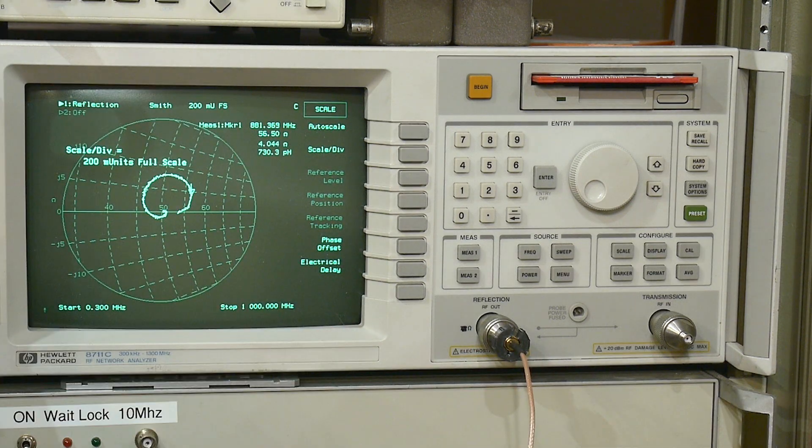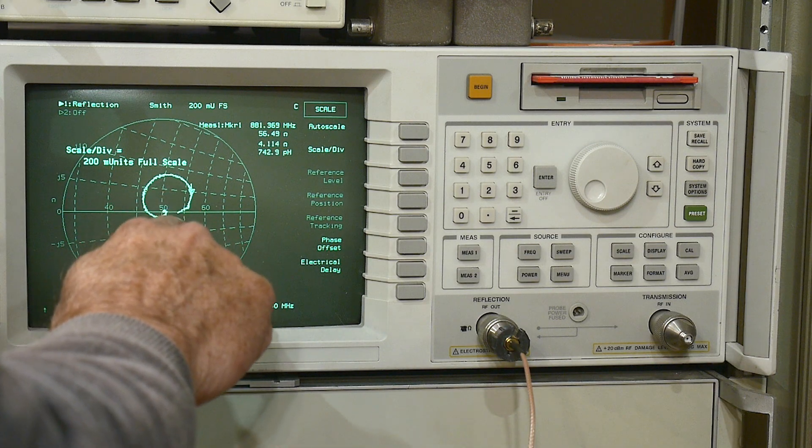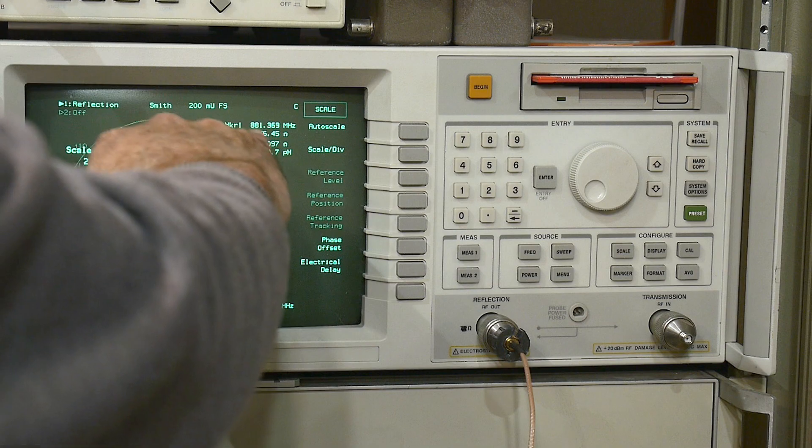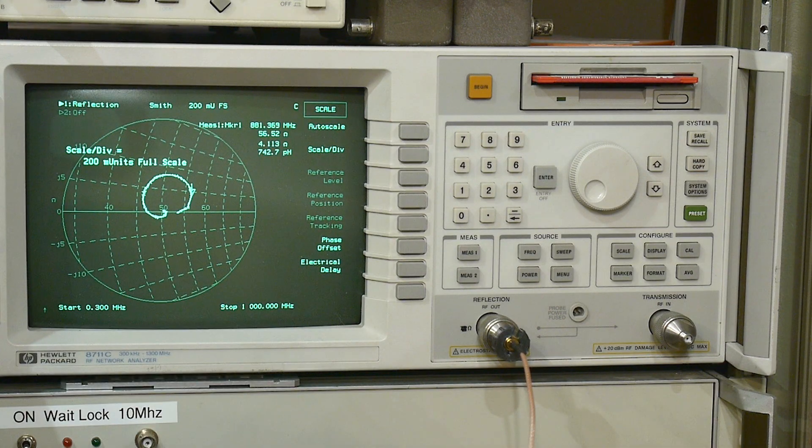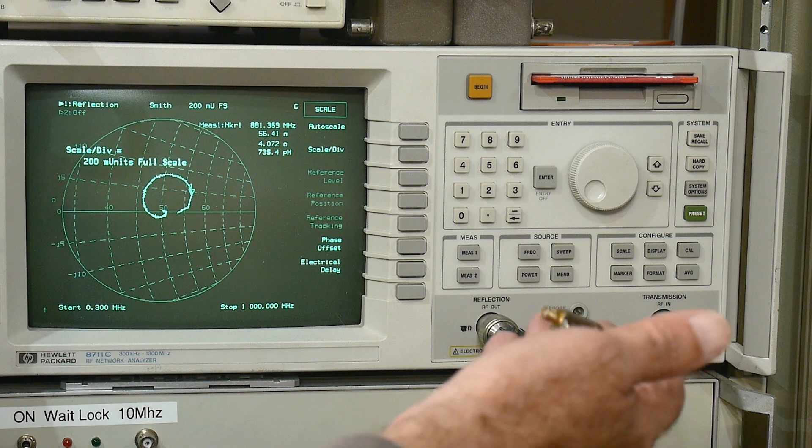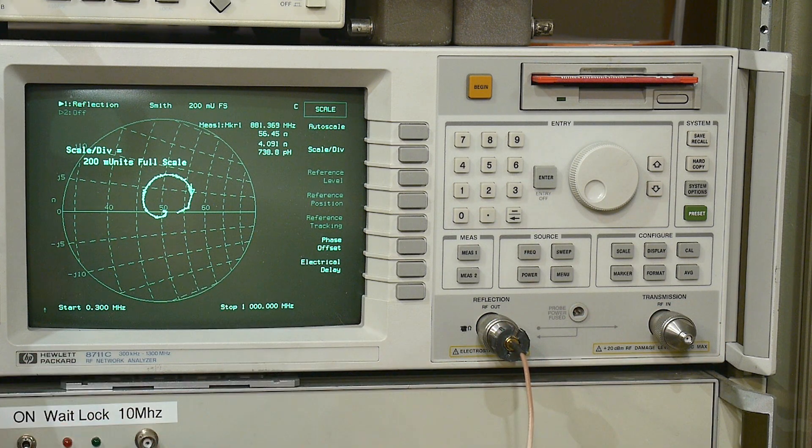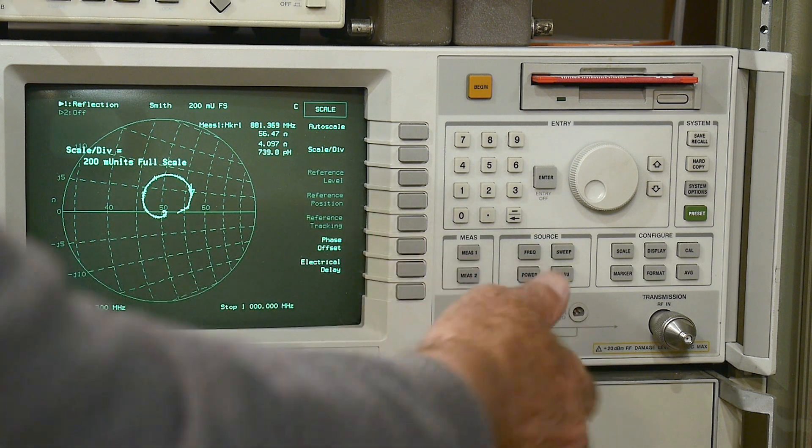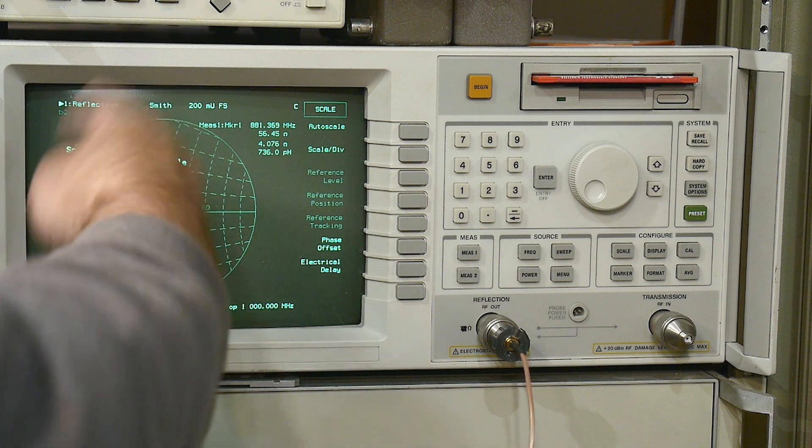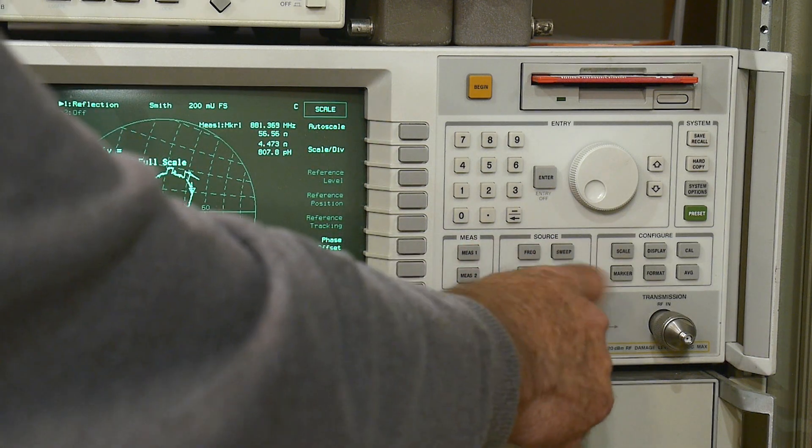And you can see, wow, it starts here at 50, goes all the way out to maybe 57 or something like that. Maybe we can read it off right here - it's 56 over there. So yeah, just because you have a super short cable, if you're making critical measurements and you might be worried about the cable, it's good to calibrate at the end of the cable and get rid of these artifacts. They will calibrate out.